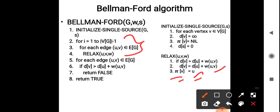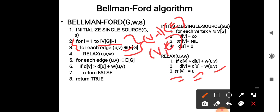The time complexity of the main loop is O(V × E), because the outer loop runs V - 1 times and the inner loop checks all E edges. So the total time for this portion is O(VE).